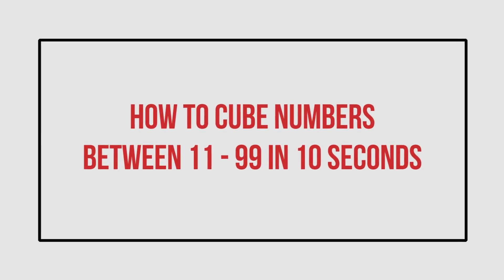For example, you might come across a question like 52 cube, where you cannot sit and solve 52 into 52, get an answer, and then multiply with 52 once again. It's going to take a lot of time, and you won't be having the time in the first place. So this video will help you calculate cubes faster from number 1 to 99.